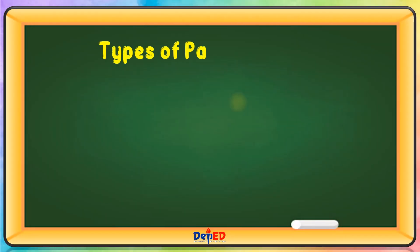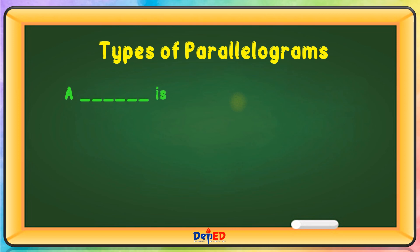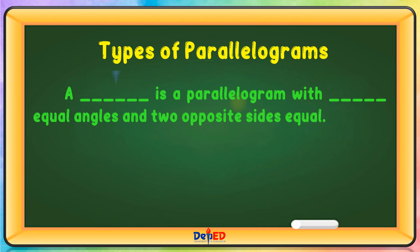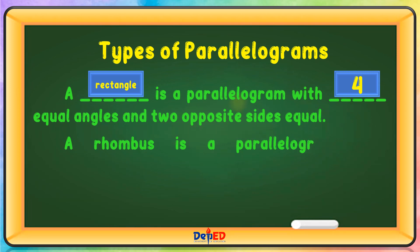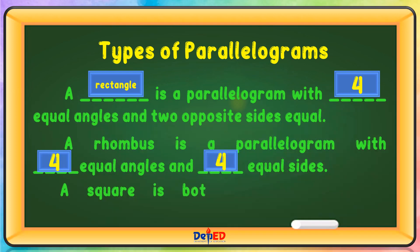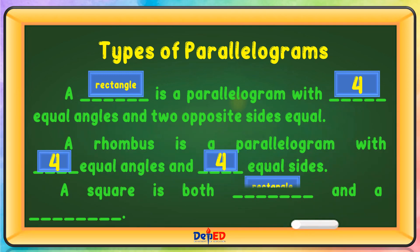Types of parallelograms: A rectangle is a parallelogram with four equal angles and two opposite sides equal. A rhombus is a parallelogram with four equal sides. A square is both a rectangle and a rhombus.